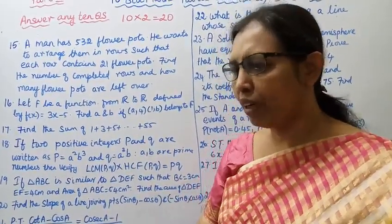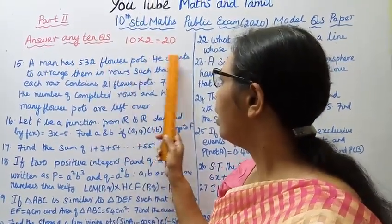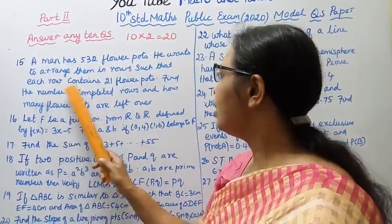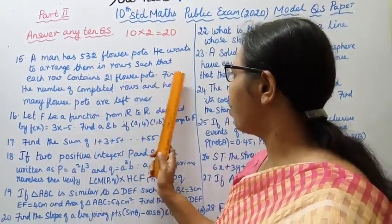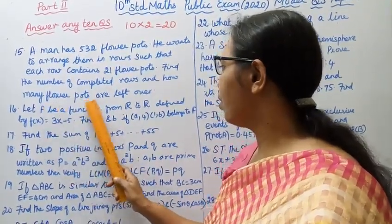Question 15: A man has 532 flower pots. He wants to arrange them in rows such that each row contains 21 flower pots. Find the number of completed rows and how many flower pots are left over.